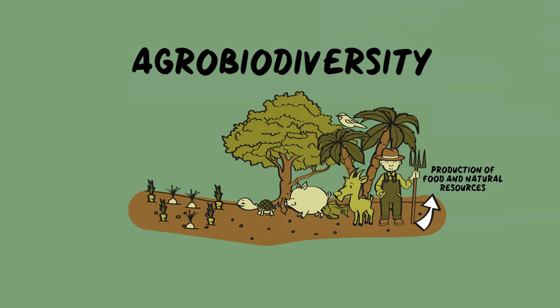Agrobiodiversity includes soil microorganisms, pollinating insects, and the surrounding living environment.